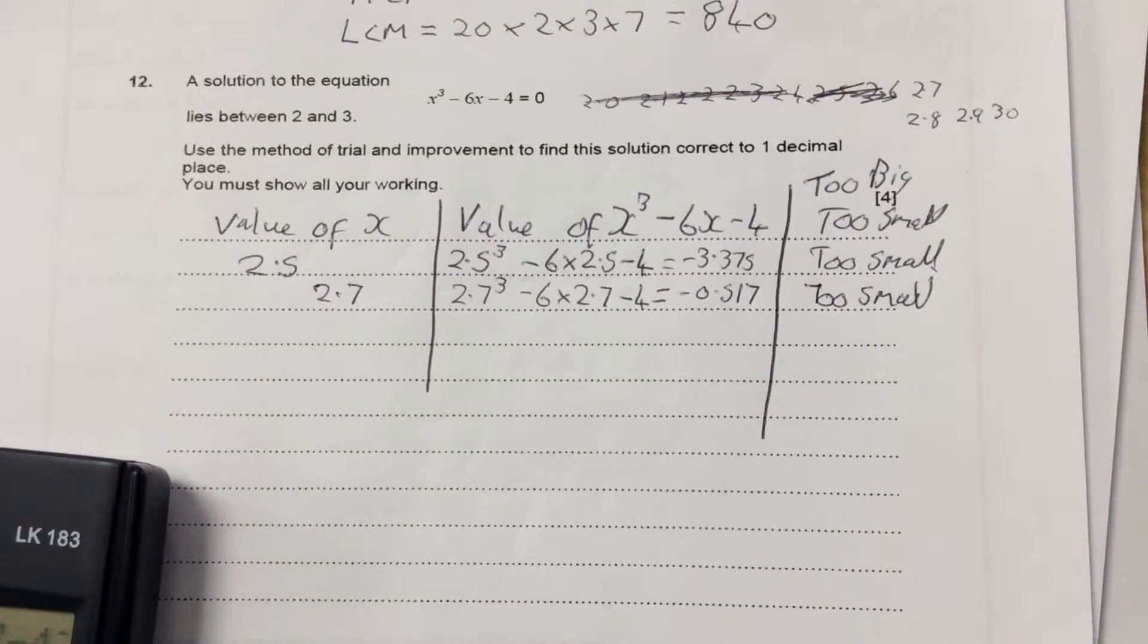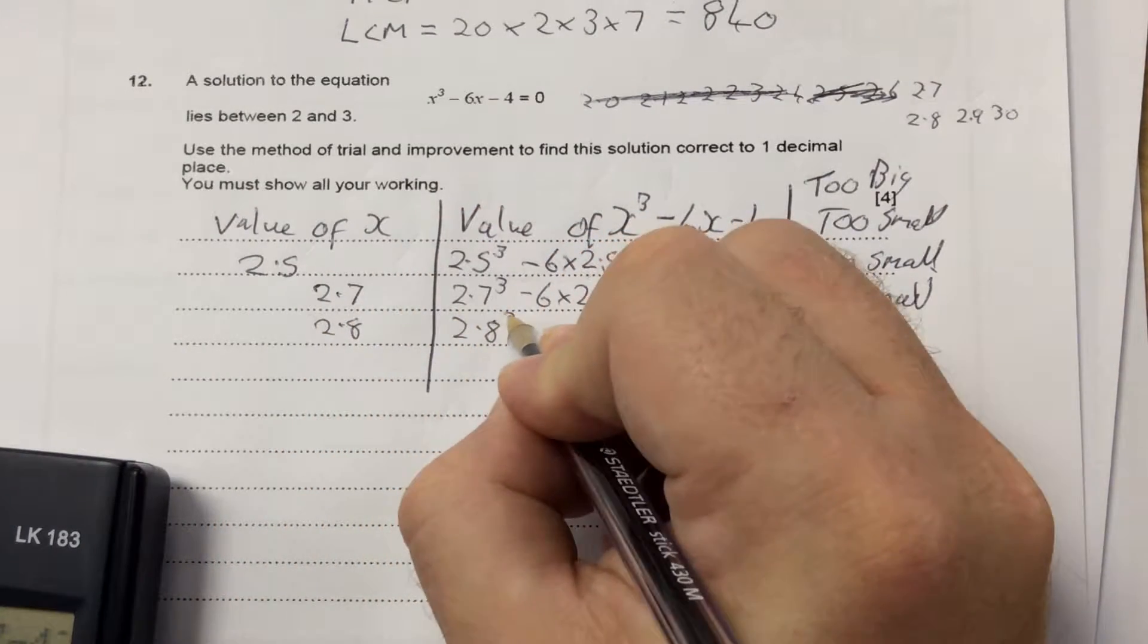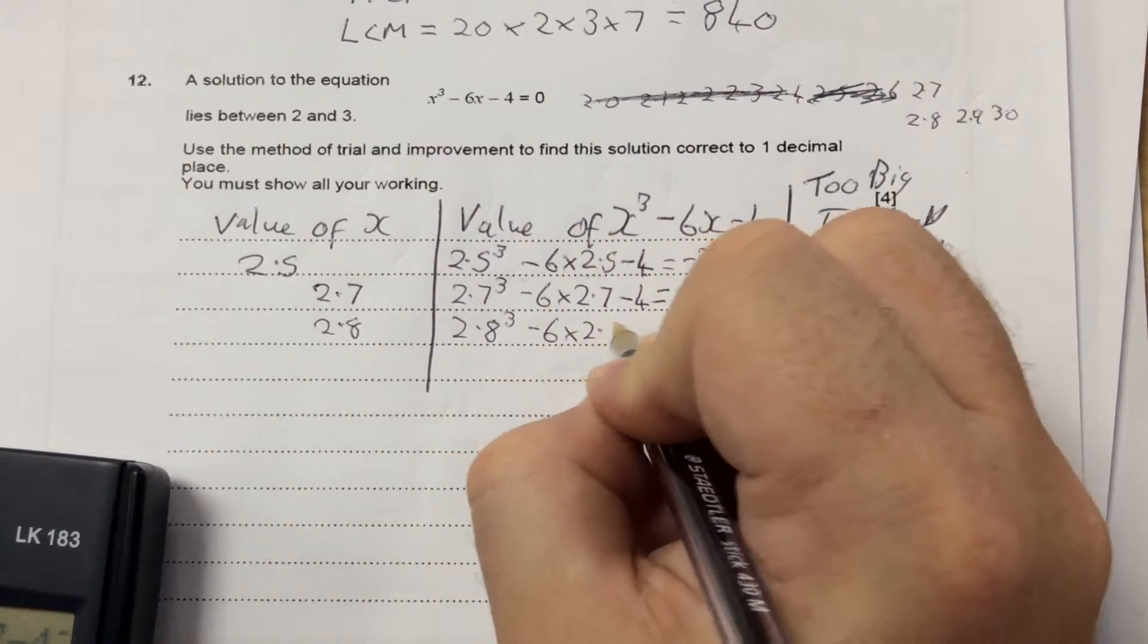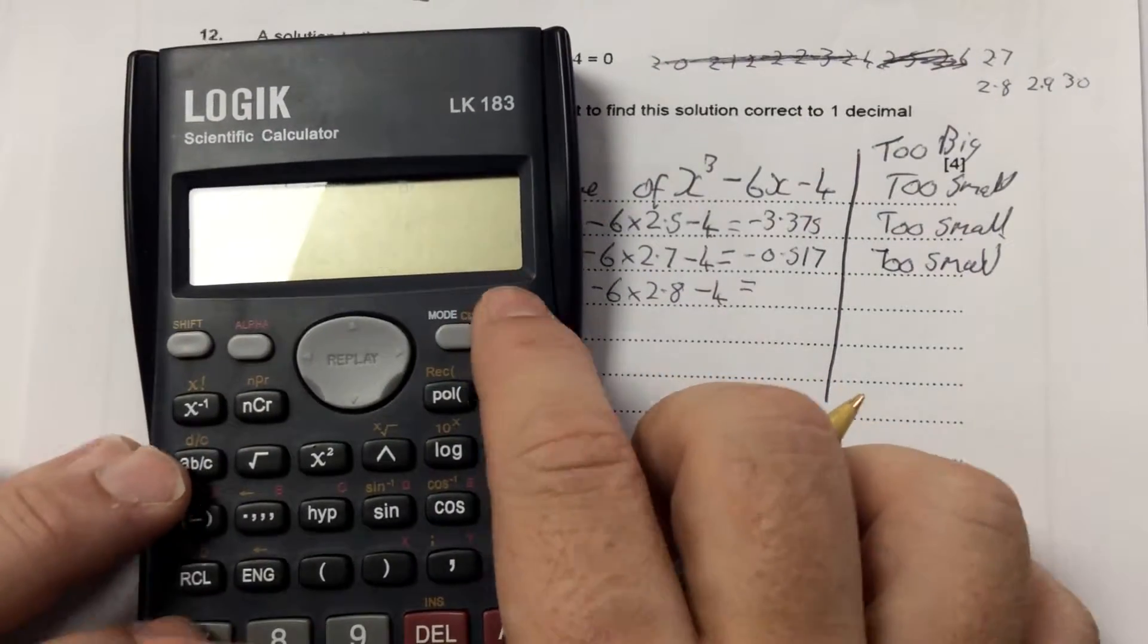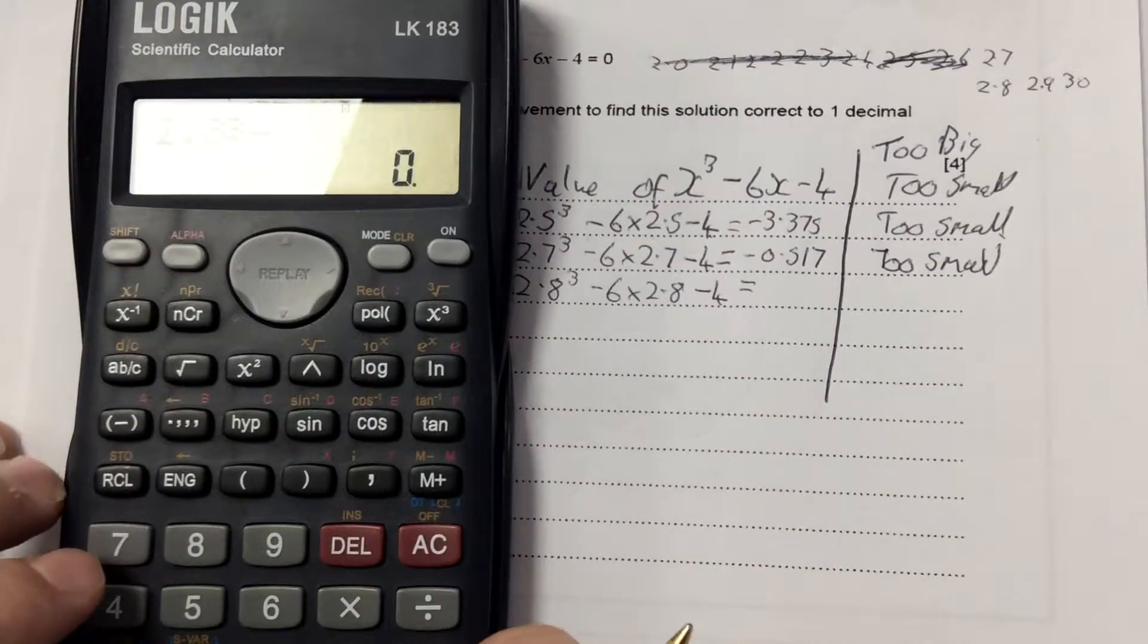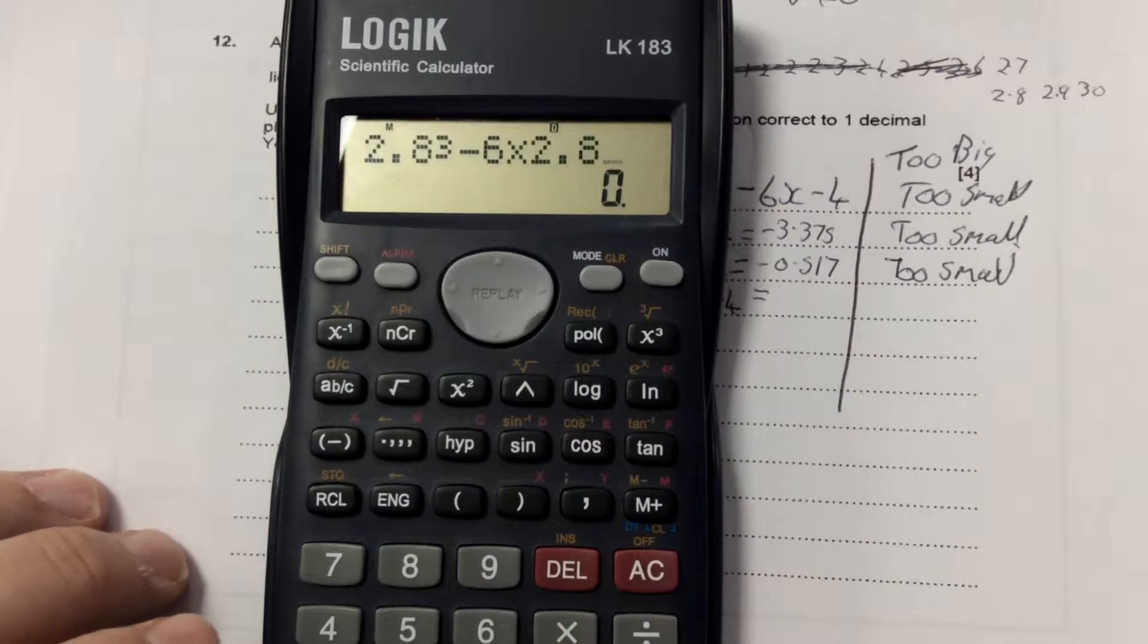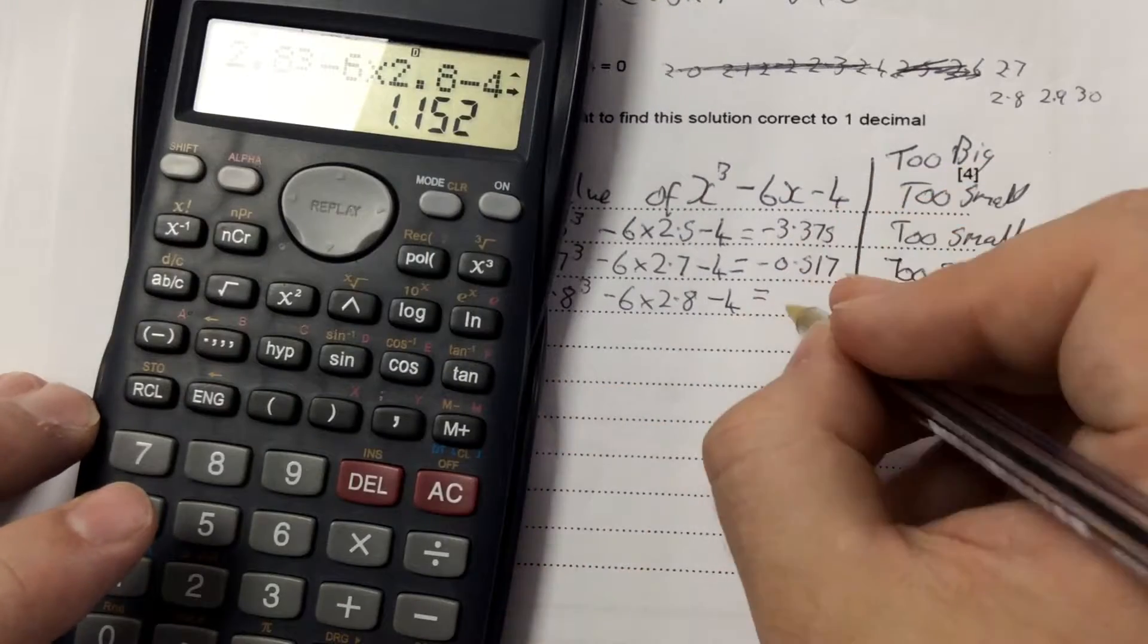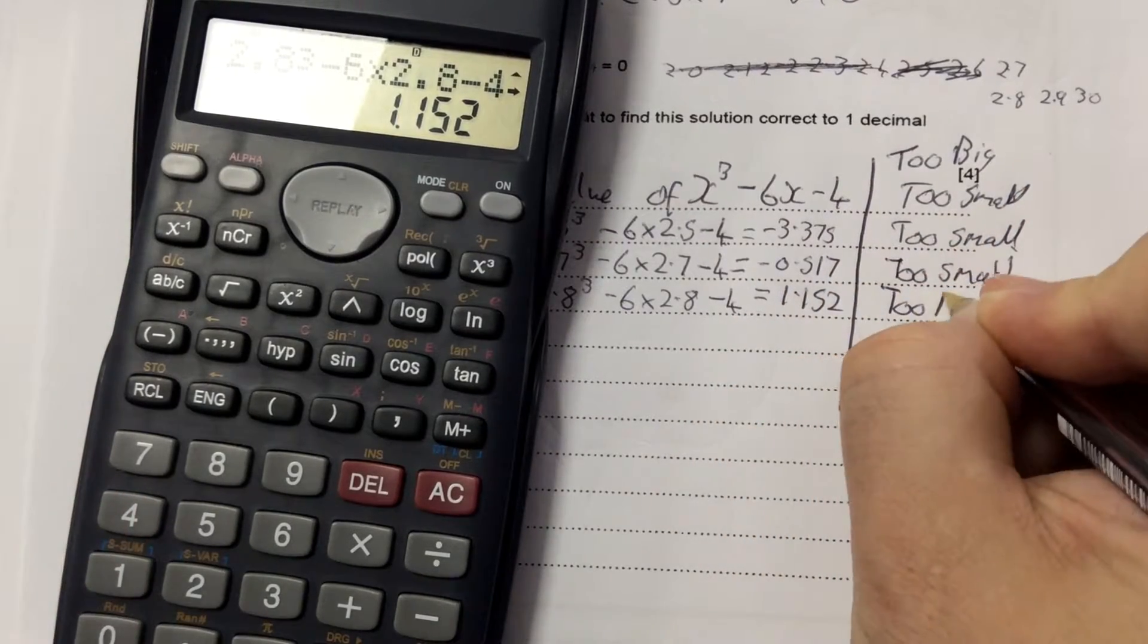But that's quite close, so I'm going to try 2.8. So 2.8³ - 6 × 2.8 - 4. And that comes up as +1.152, which is too big because it's bigger than 0.